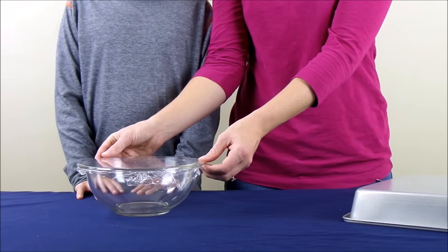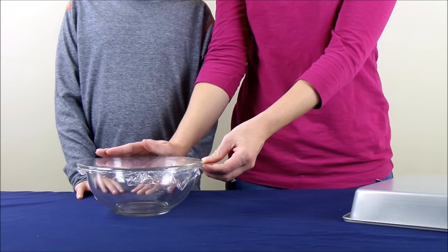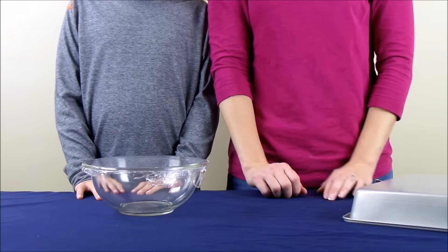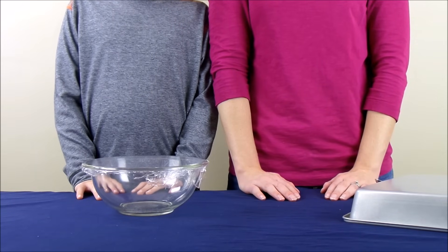The most important thing with the saran wrap is that you get it very tight across the top of the bowl. So take your time when you're positioning it. Once you have it tight, you're ready to move on to the next step.